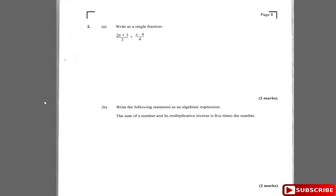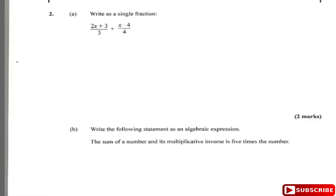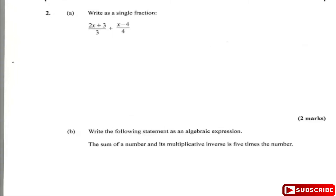Now we're at question 2. Question 2 says: write as a single fraction 2x+3 over 3 plus x-4 over 4. To write as one single fraction, we find the LCM, and the LCM between 3 and 4 is 12.